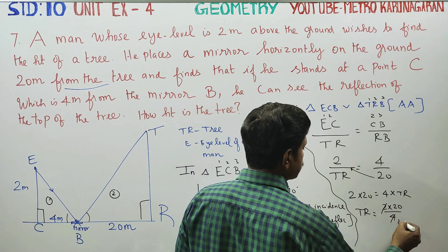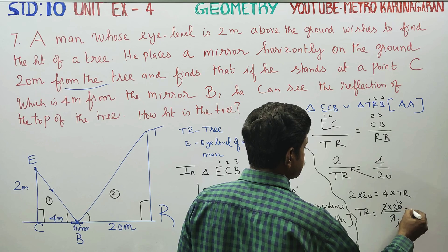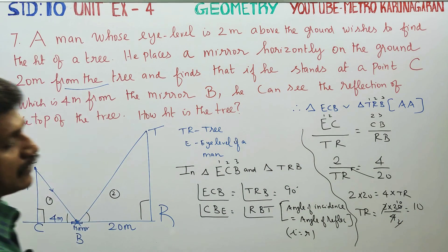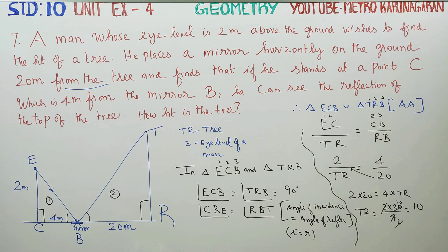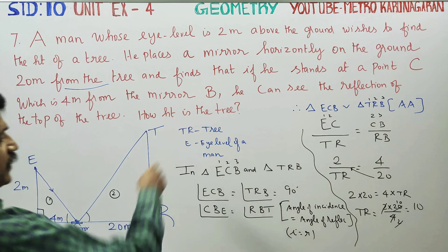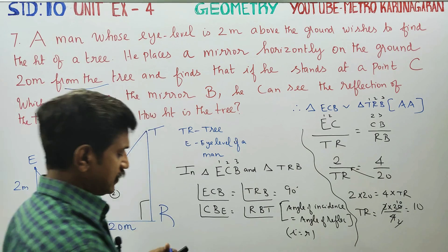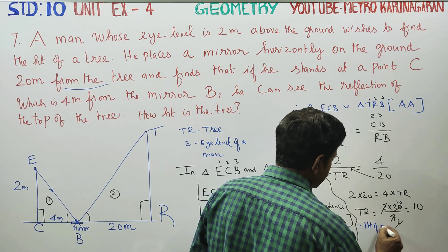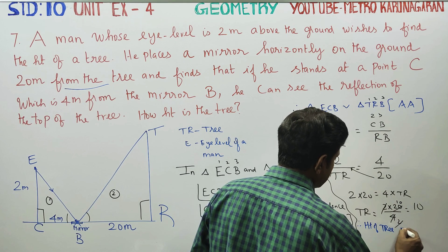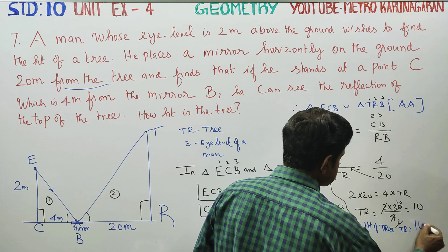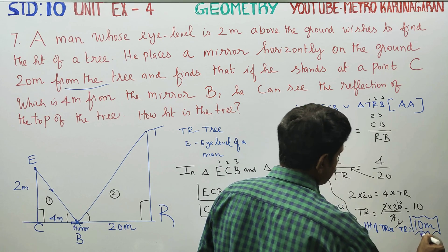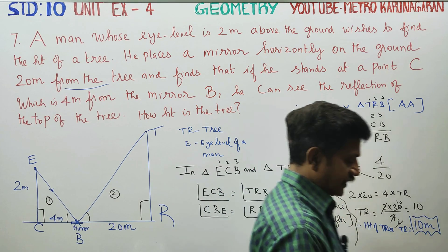TR is equal to 2 times 20 divided by 4, which equals 10. Therefore, the height of the tree TR is equal to 10 meters. This is the end of the solution. Your answer is 10 meters. Thank you.